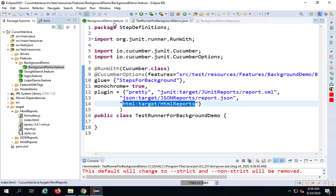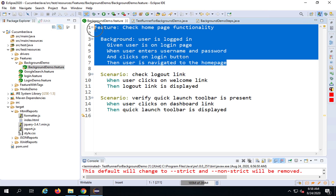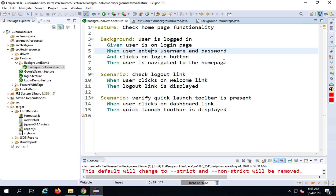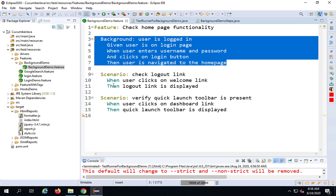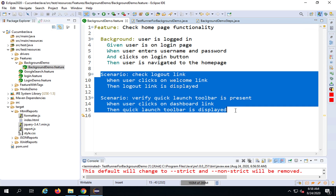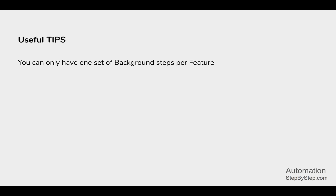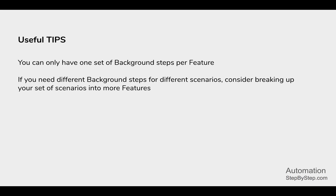This is how background will run, and the steps will be shown in the result as well. It makes it very easy for readers of the feature file to know that these are the background steps, which get executed before every scenario. Now some useful tips: you can have only a single background section per feature file. If you want multiple different backgrounds, consider breaking up the scenarios into more features.